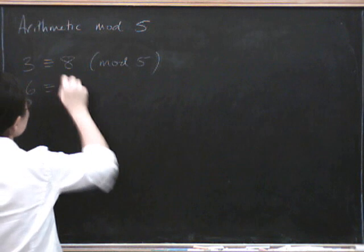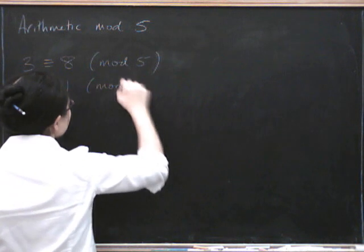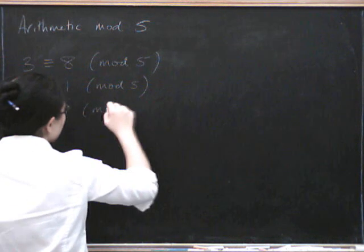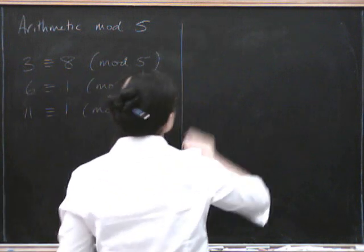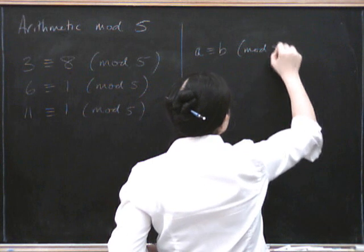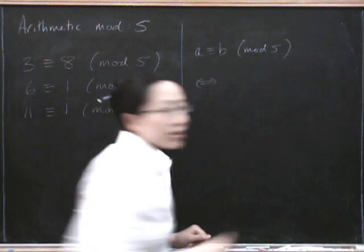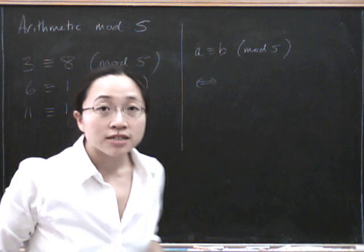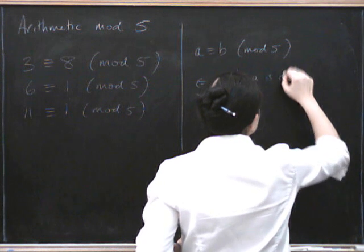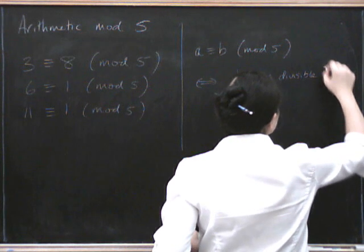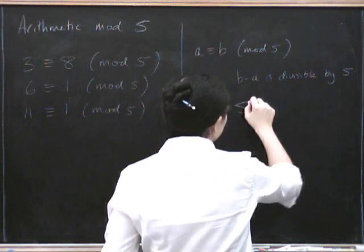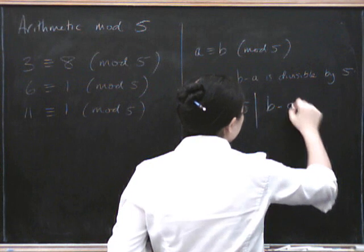And so 6 will be congruent to 1 mod 5 and 11 will also be congruent to 1 mod 5. And the general rule is that a is congruent to b mod 5 if and only if the difference between a and b is divisible by 5. So we say b minus a is divisible by 5. And we sometimes write that like this, 5 divides b minus a.